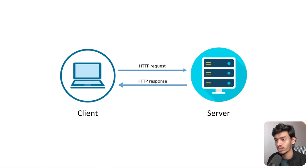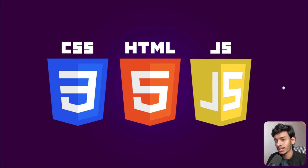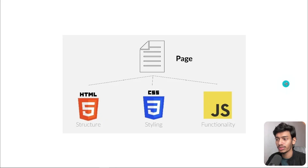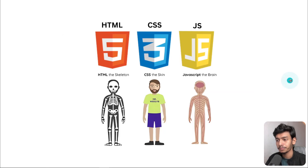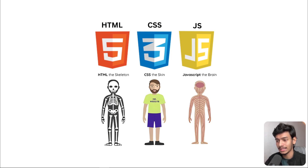We also understood what is front-end, back-end, and full-stack. We learned that HTML, CSS, and JavaScript are the core of a website, and that every single page is built by them. We also saw an example using the skeleton, style, and brain analogy for HTML, CSS, and JavaScript.